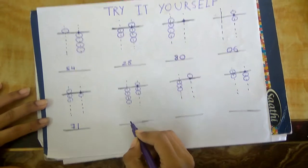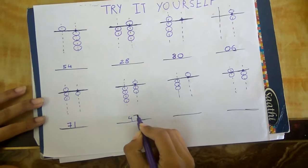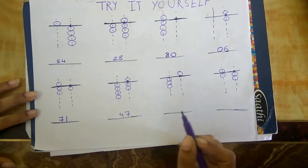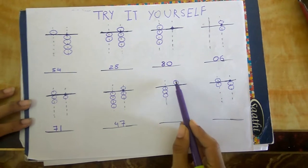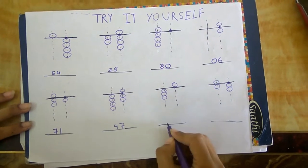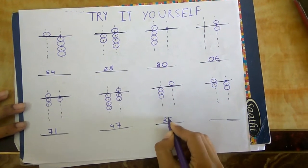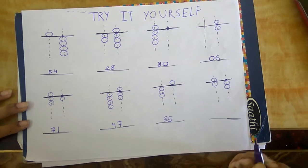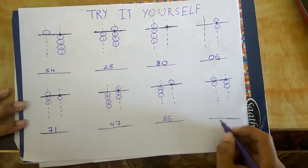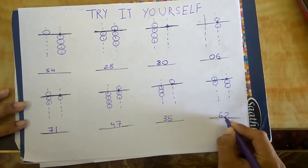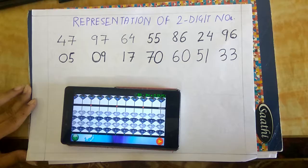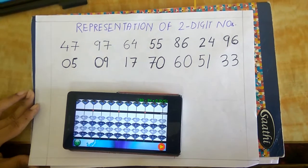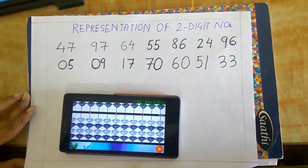In the sixth sum, it is 4 and 7, so this is 47. In the next sum, this is 3 and 5, so this is 35. In the next sum, it is 6 and 2, so this is 62.